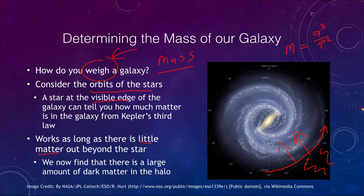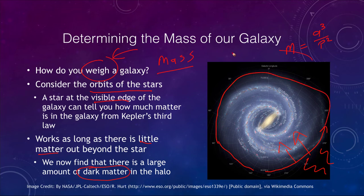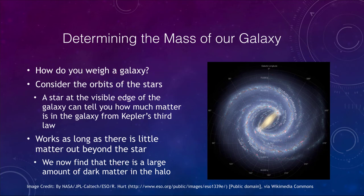However, what we're finding is that there are significant amounts of dark matter out beyond the visible edge of the galaxy. While it looks like our galaxy ends at a certain point, in reality it extends many times that distance, and there is a lot more material out there. This is what we call dark matter.